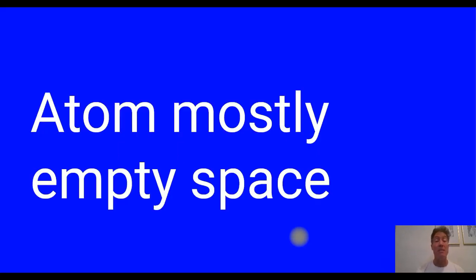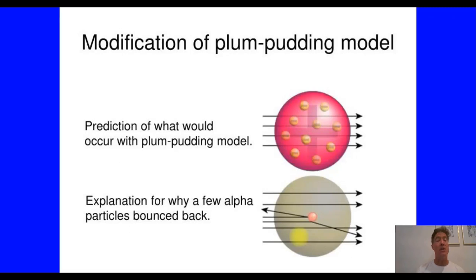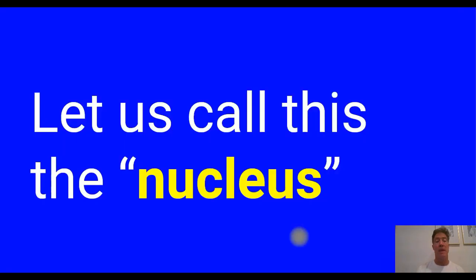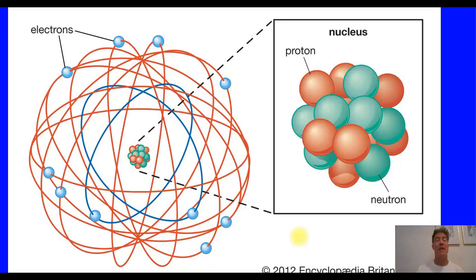So we have a new theory: the atom must be mostly empty space, and all the positive charge and almost all of the mass of an atom is located in a small, dense region known as the nucleus — the tiny central core of an atom composed of the protons and neutrons. Once neutrons were discovered, they knew they had to also be in that tiny, dense, positively charged core. Here is a rendition of this — the nucleus surrounded by a swirling orbital cloud of electrons.